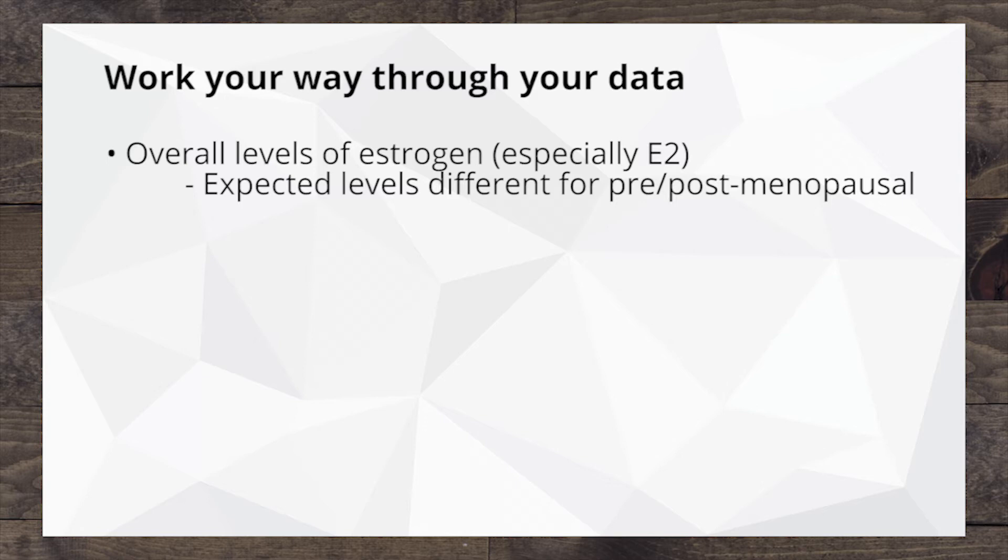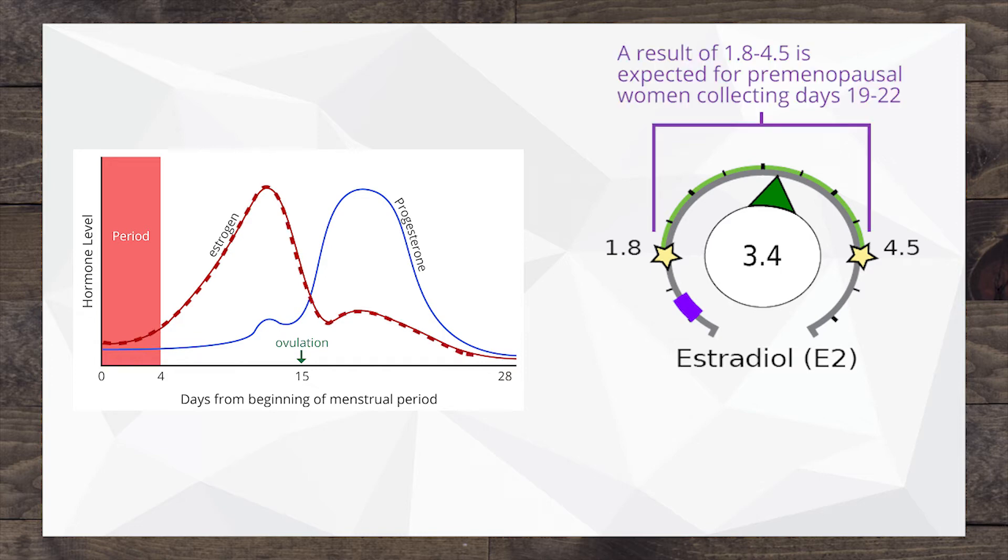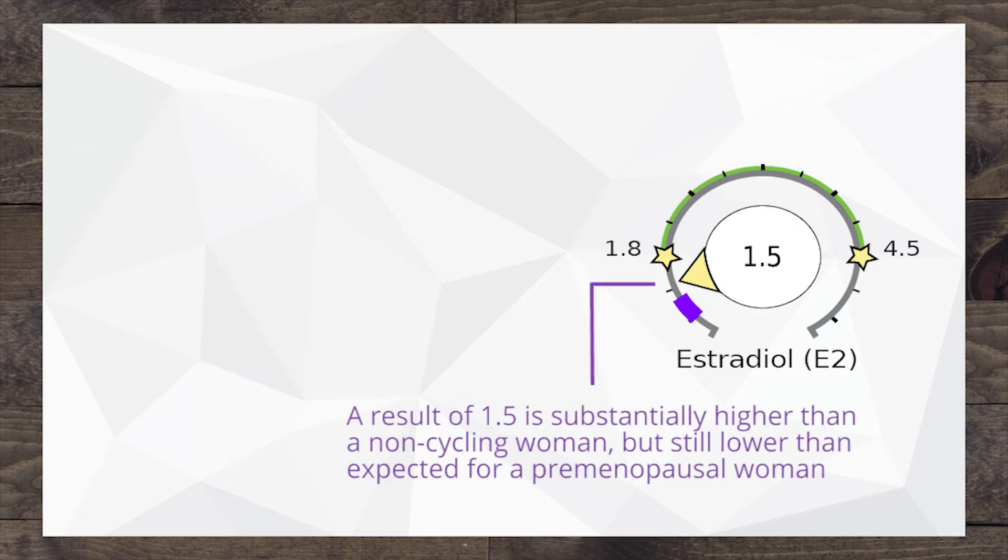The premenopausal range is up higher. That's where we expect to find women who are menstruating when they're collecting in that luteal phase, that latter third of the cycle. We expect to find them in this range. So if they end up a bit lower, say the estradiol's at 1.6, 1.5, 1.3, those levels would be considered a modest deficiency for those estrogens.